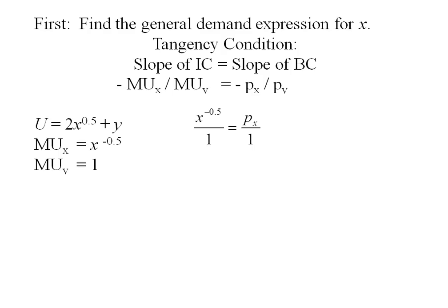So I don't like that negative exponent so I'm going to move it down to the denominator. Now I'm going to cross multiply the x up and the px down. Now to get rid of that x to the 0.5, I'm going to have to square both sides.